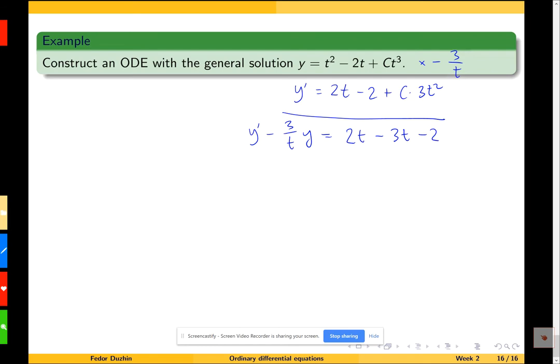That comes from y'. Then -2t multiplied by -3/t, so minus minus gives me plus, so I will get +6. Then I have +C times 3t² from y' and -C times 3t² from y, so these two will cancel each other and this part disappears.